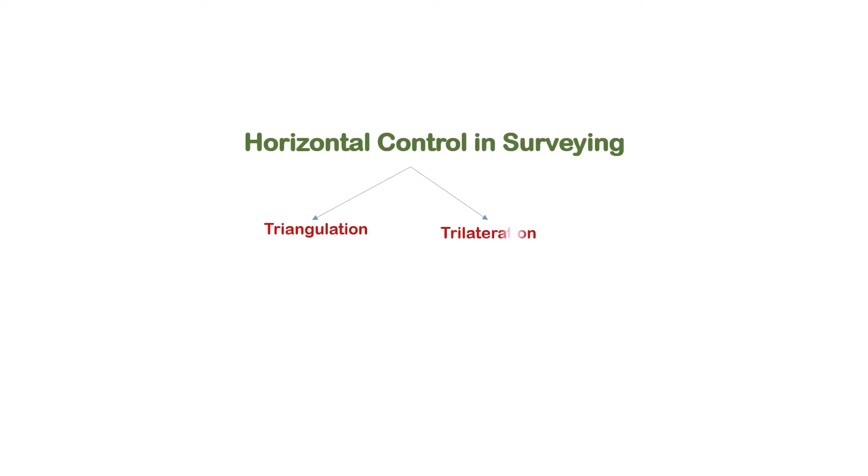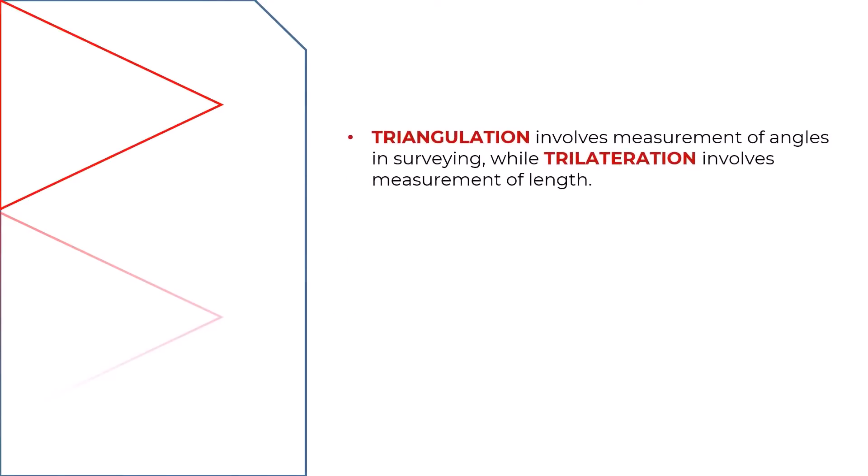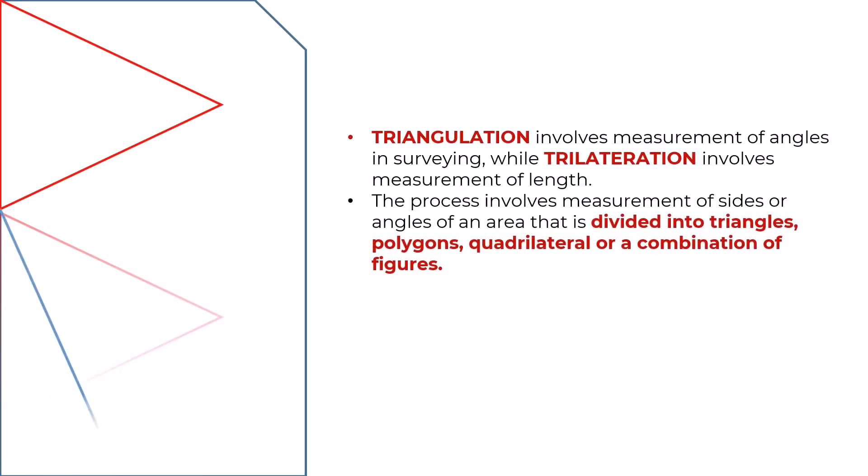The basic difference between triangulation and trilateration is that triangulation involves the measurement of angles in surveying, while trilateration involves the measurement of distance or length. The process involves the measurements of sides or angles of an area that is divided into triangles, polygons, quadrilaterals or a combination of figures.